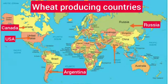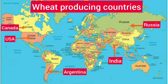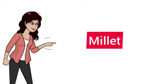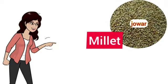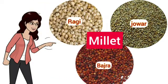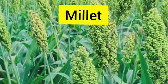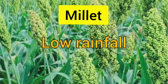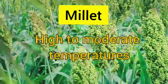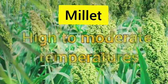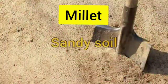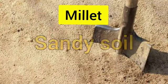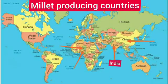In India, wheat is grown in the winter season. Now, coarse grains like jowar, bajra, and ragi are called millet. It is a hardy crop that needs low rainfall and high to moderate temperatures. It can be grown on less fertile and sandy soil. The main millet-producing countries are India, China, Nigeria, and Niger.